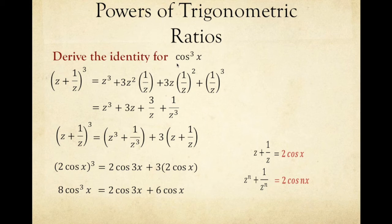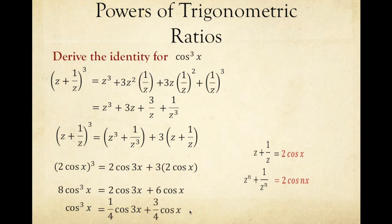To derive the identity for cosine cubed x, we divide everything by 8. The result is cosine cubed x equals one-fourth cosine 3x plus three-fourths cosine x. This is our identity — our formula for cosine cubed x.